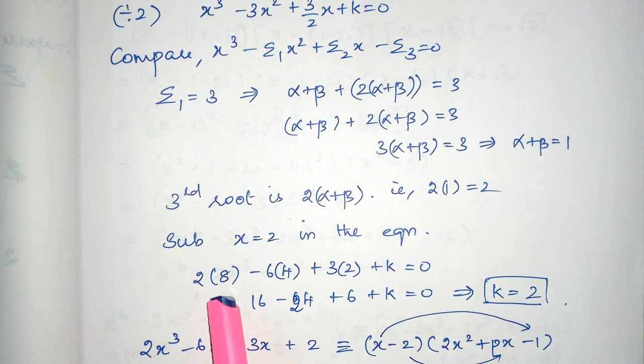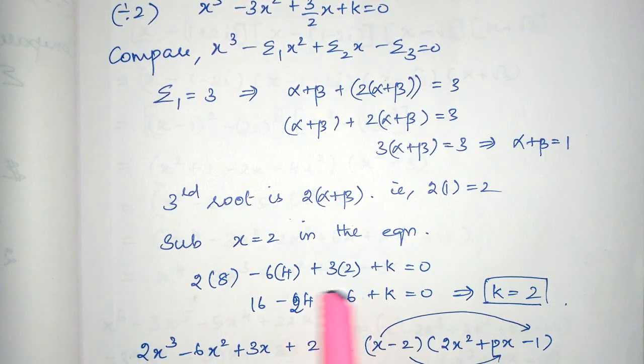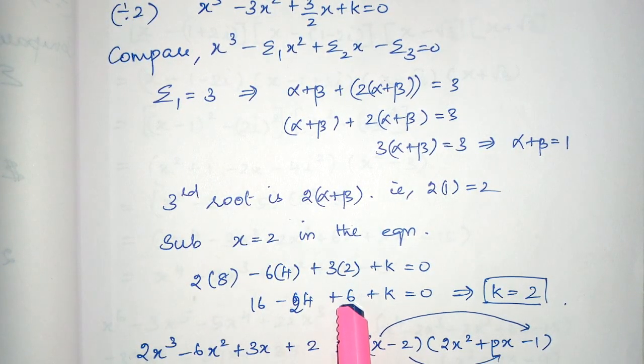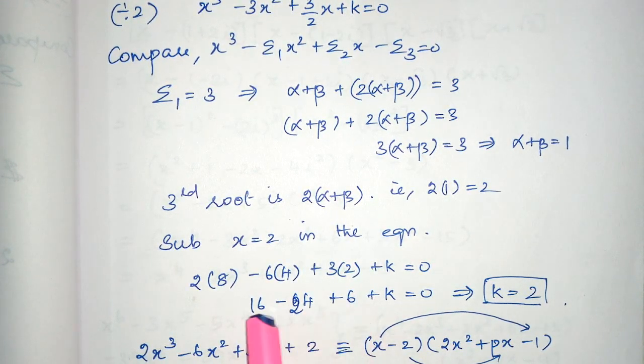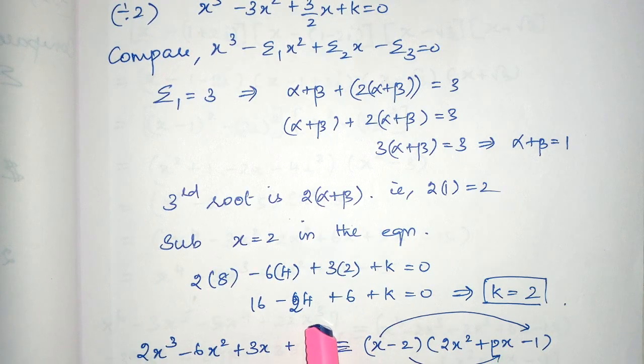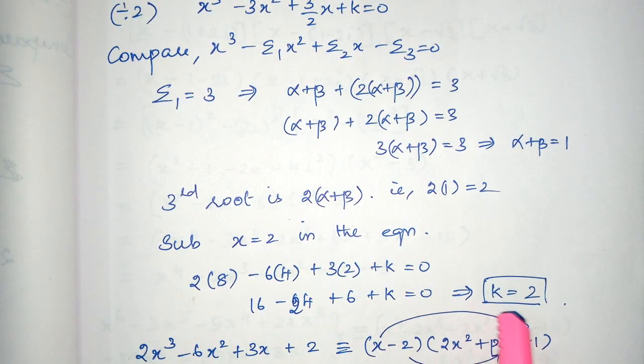it is 2 cube, which is 8, and 2 square, which is 4, and 2. So, 2 into 8, 16, 6 into 4, 24, 3 into 2, 6, plus k is equal to 0. So, minus 24 plus 22 is minus 2. Take the 2 that side,